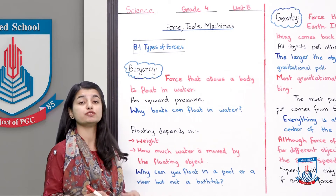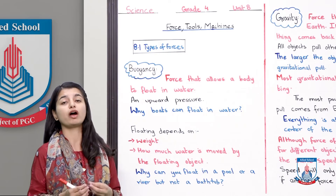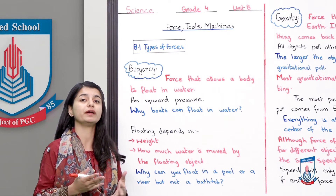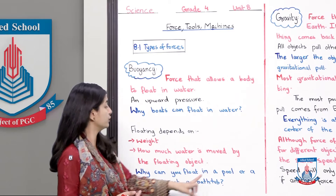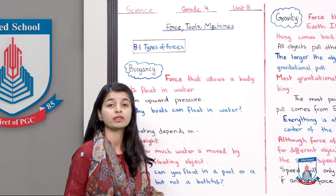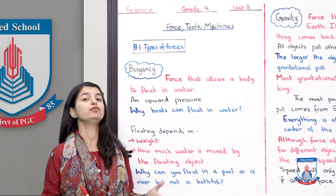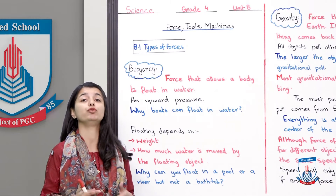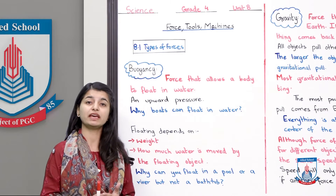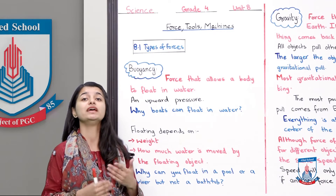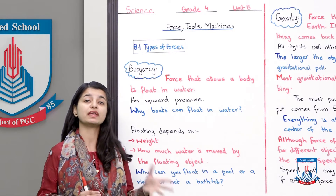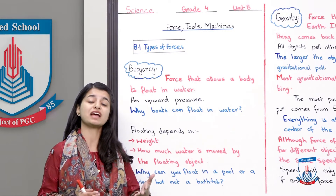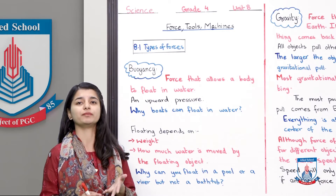A floating object is moved by the water it displaces. If the weight of the object is less than the water displaced, it floats, but if the weight is more than the water displaced, it sinks. Why can you float in a pool or river but not in a bathtub? In a bathtub, your weight is more than the water, so you don't float. In a river or lake, your weight is less than the water, so you float.